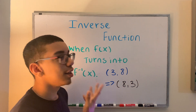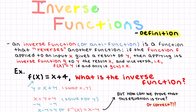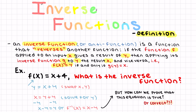Let's go over the definition of an inverse function. An inverse function, or anti-function, is a function that reverses another function. So if the function f applied to input x gives a result of y, then applying its inverse function g to y gives the result x, and vice versa. That is: if f(x) = y, if and only if g(y) = x.